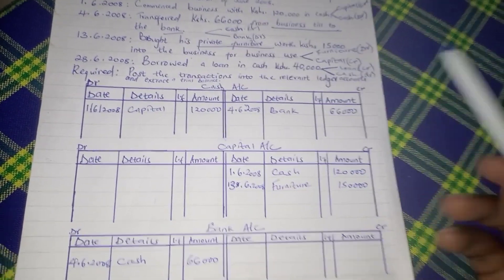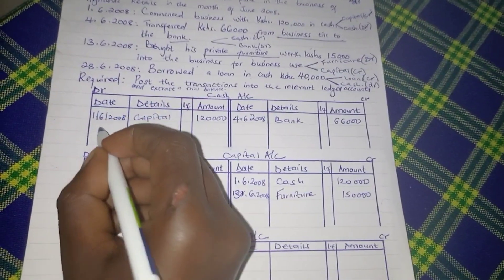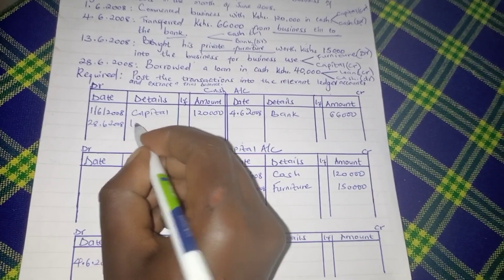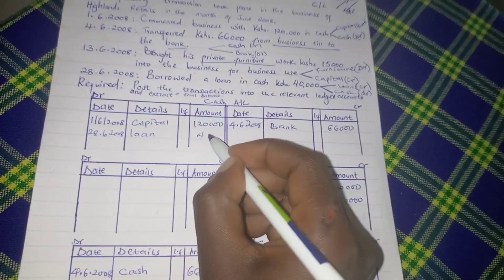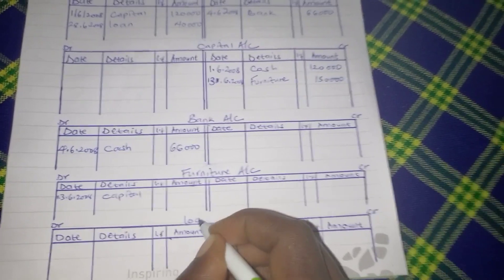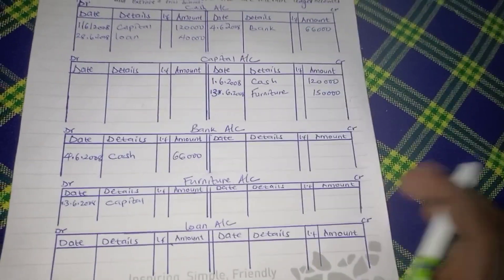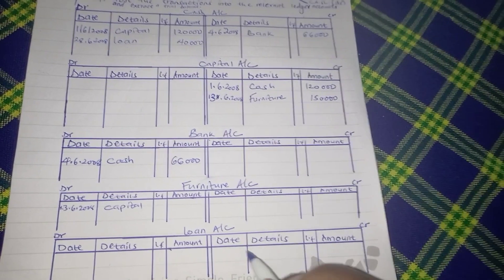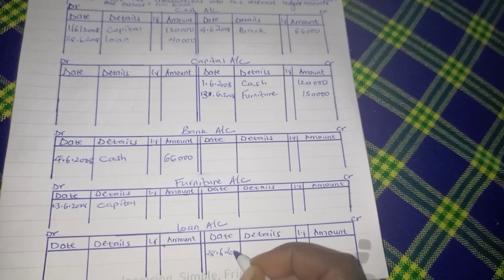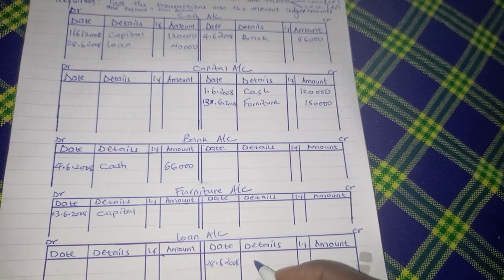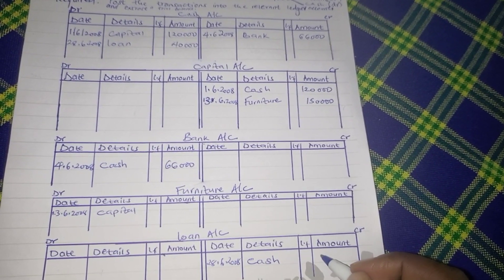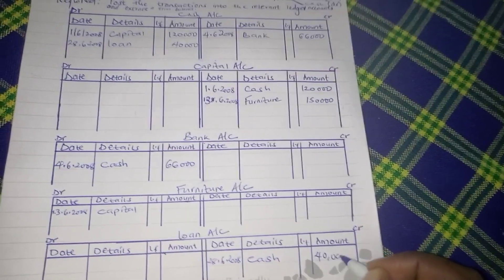We debit the existing cash account on 28-6-2008 with the detail showing loan, amounting to $40,000. Then we open the loan account and credit it on 28th June 2008, with the detail showing that the loan came in the form of cash, amounting to $40,000.